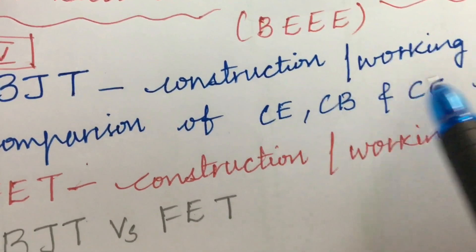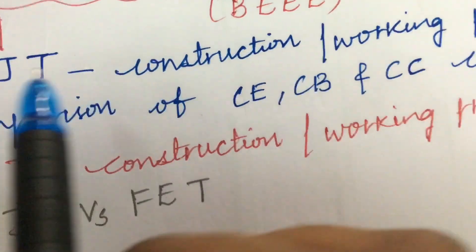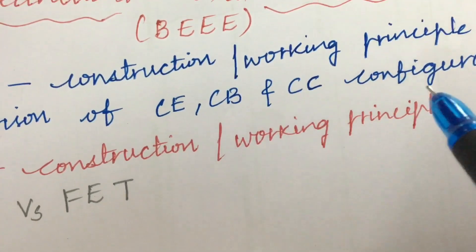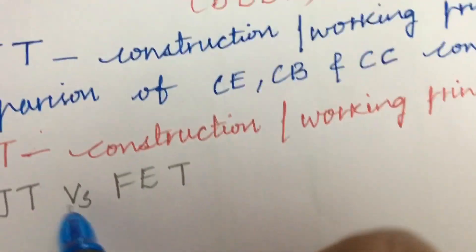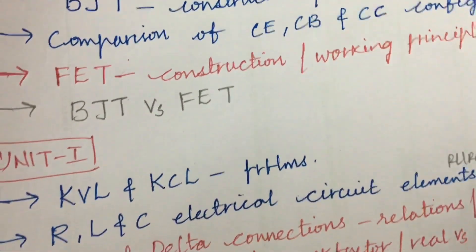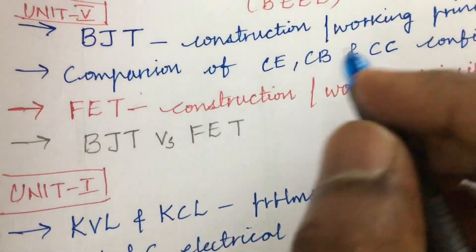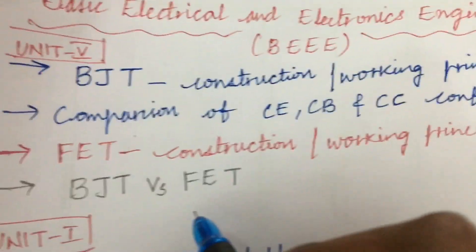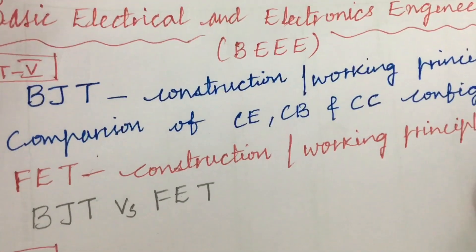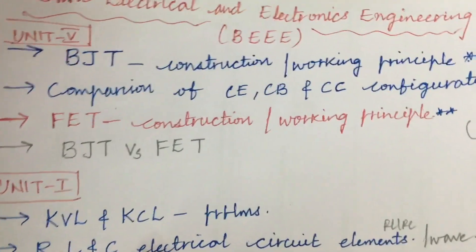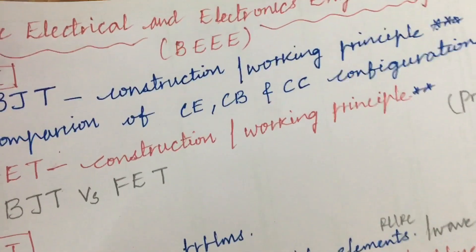Unit 5 is all about the construction and working principle of BJT as well as the comparison of CE, CB and CC configurations, or FET construction and working principles and the problems related to it, and the differences between BJT versus FET. I can expect this question as the 8th question in the question paper.